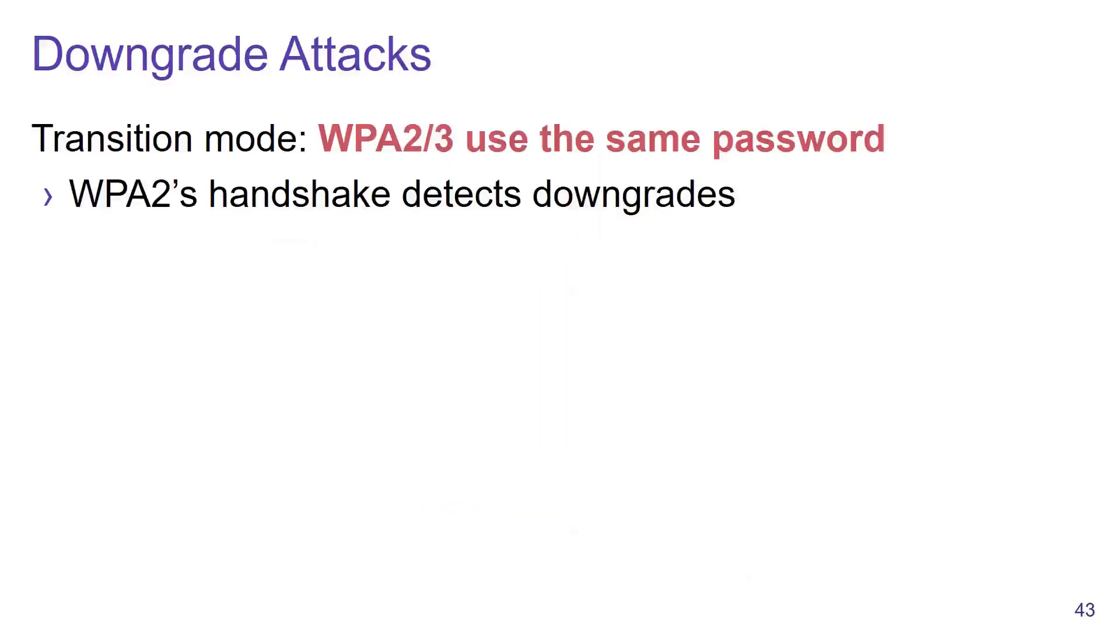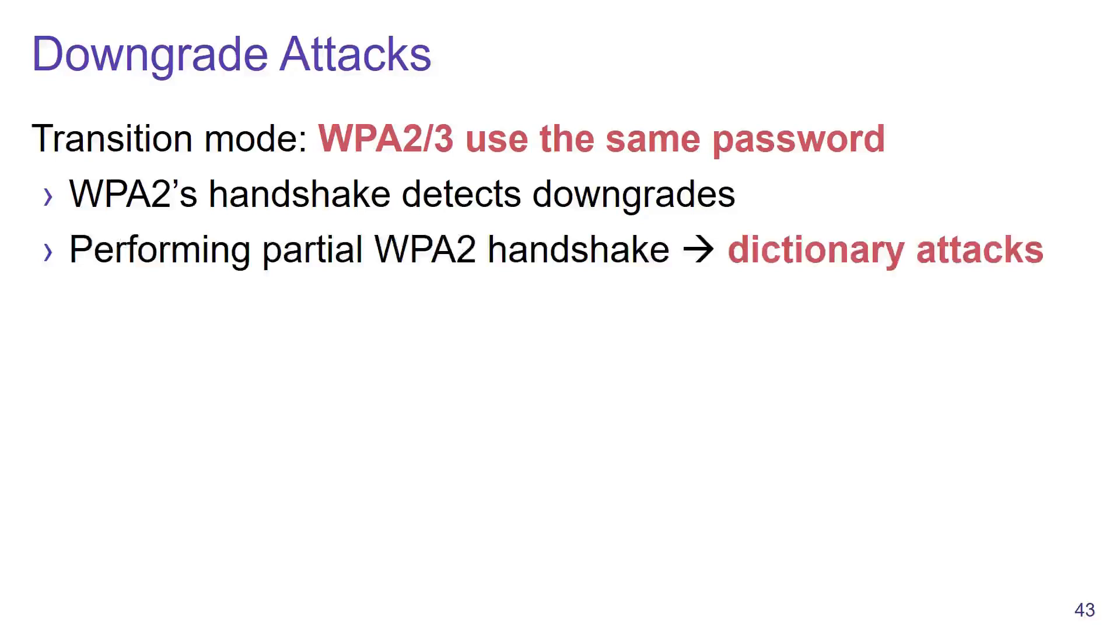Apart from this, we discovered a downgrade attack against networks that support WPA2 and WPA3 at the same time. Against these networks, we can trick a client into connecting using WPA2, and even though the handshake of WPA2 will detect the downgrade, the partial handshake that got executed already leaks enough information to perform a dictionary attack against WPA2.